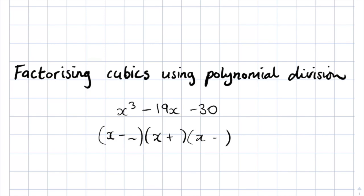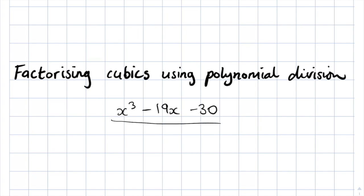We know how to do this a few different ways with quadratics, either using the quadratic formula or looking at the factors of the last number. In this case it's a little more difficult, but one way we can solve it is by using long division on the polynomial. We first need to know what we want to divide by, because in general we can divide this equation by any linear factor.